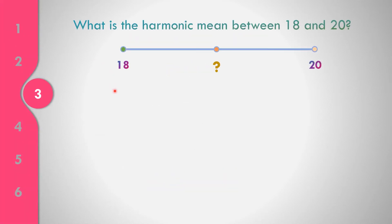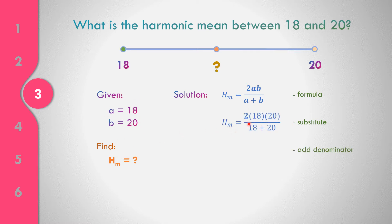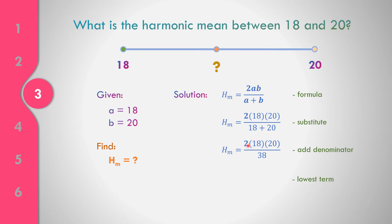What is the harmonic mean between 18 and 20? The first term A is equal to 18 and the last term B is equal to 20. Using the formula HM = 2AB / (A + B), we substitute: HM = 2 × 18 × 20, all over 18 plus 20, which equals 2 × 18 × 20 all over 38.